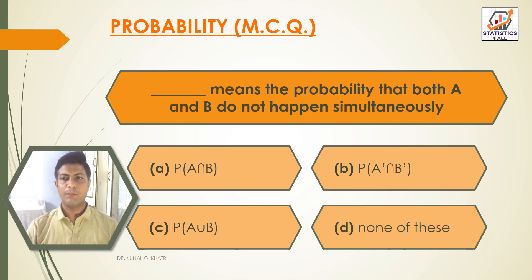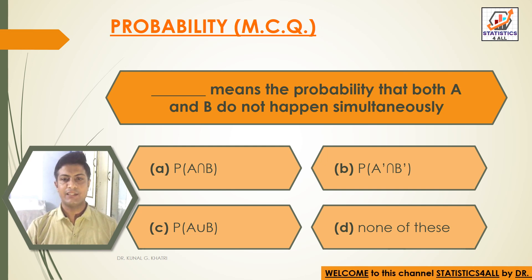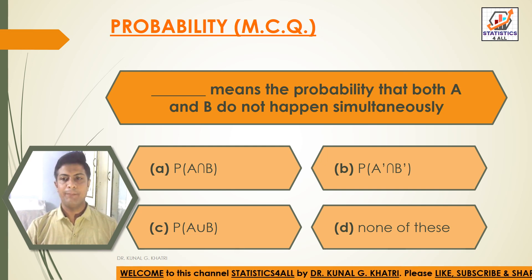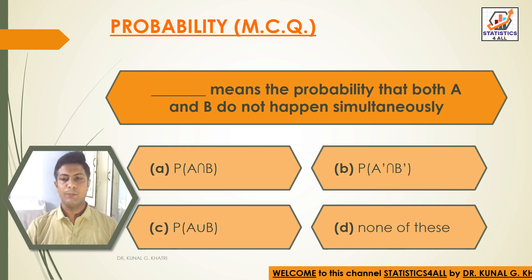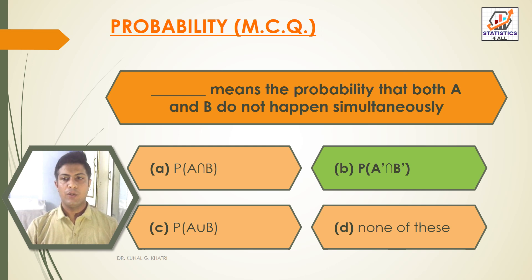Question 12: Dash means the probability that both A and B do not happen simultaneously. Option A: P(A∩B). Option B: P(A'∩B'). Option C: P(A∪B). Option D: None of these. Answer: Option B — P(A'∩B') means the probability that both A and B do not happen simultaneously.